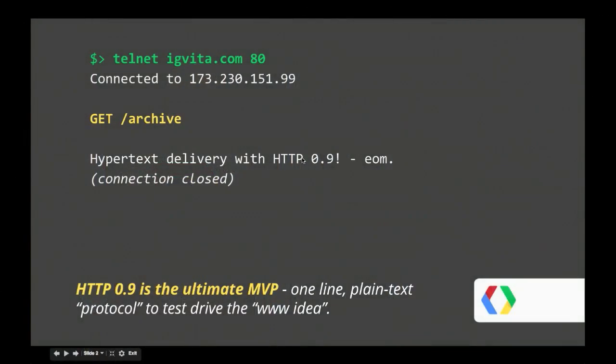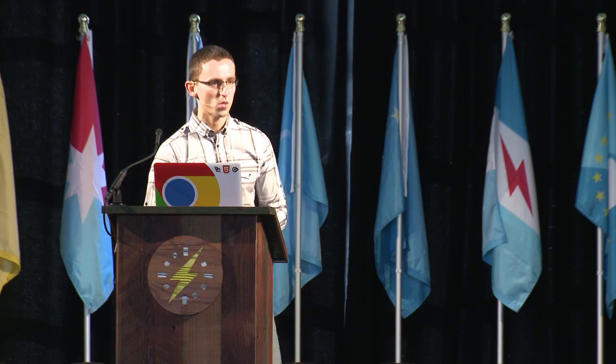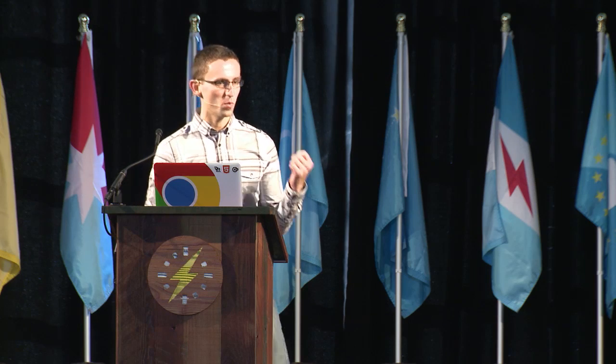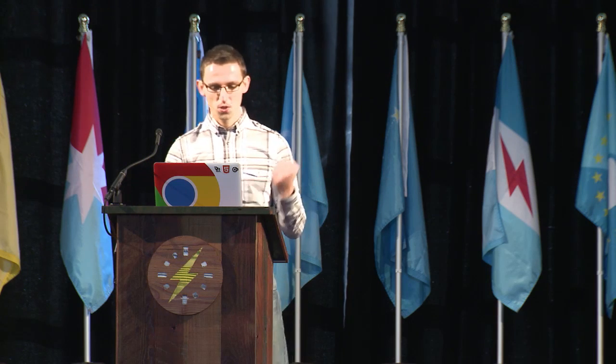Let's start at the beginning: HTTP 0.9. This is back in probably early 1993. Tim Berners-Lee has this idea for the World Wide Web, and this is the ultimate MVP. If you guys have not tried this, I encourage you to. Nginx and I believe even Apache still to this day support HTTP 0.9. Open a connection to a server, type in GET slash whatever the URL is. That's all you need. You will get your response back. There's no headers, there's no metadata about anything. This is a one-line protocol, and this is the beginning of the modern web. Still works today.